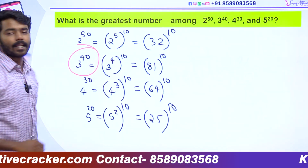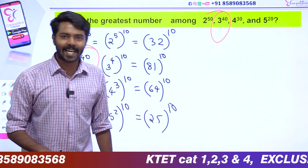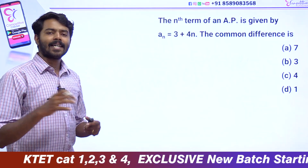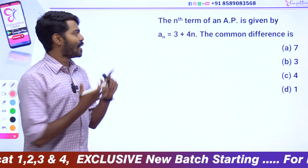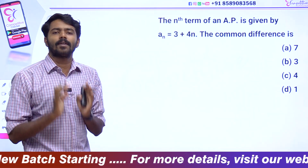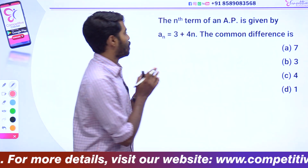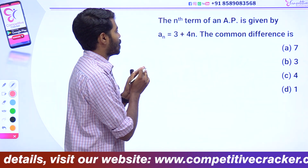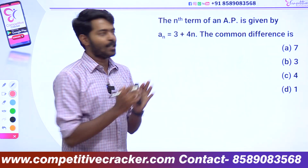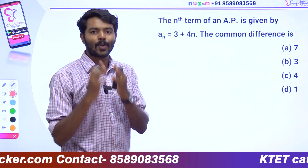3 raised to 40 equals equal number. This type of example involves a very small number comparison. I will explain the complete sequence and talk about the basic sequence — the nth term of an AP is given by a_n equals 3 plus 4n, common difference.